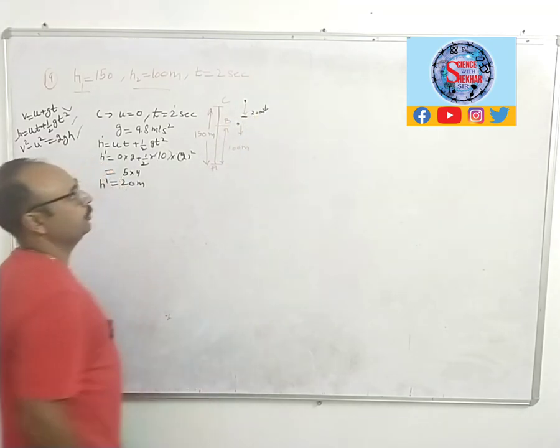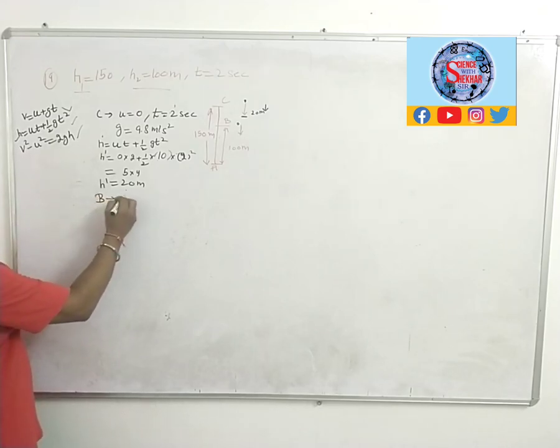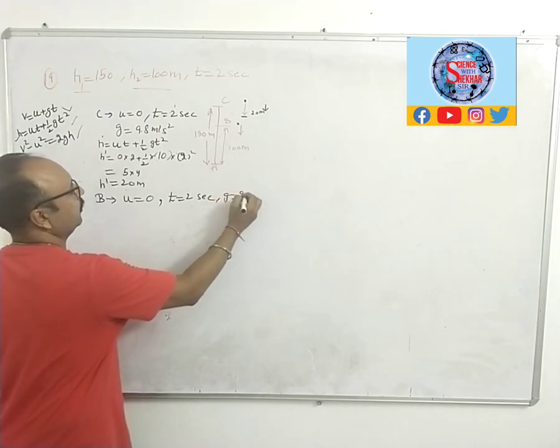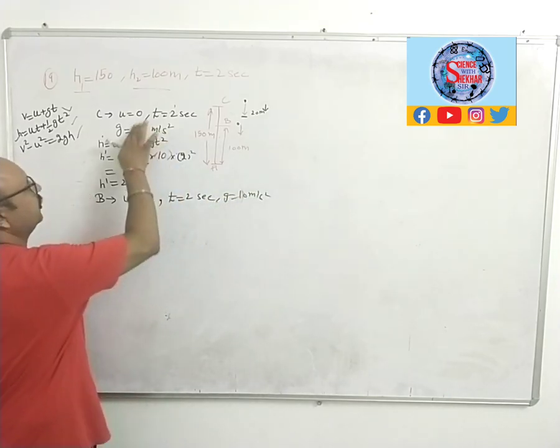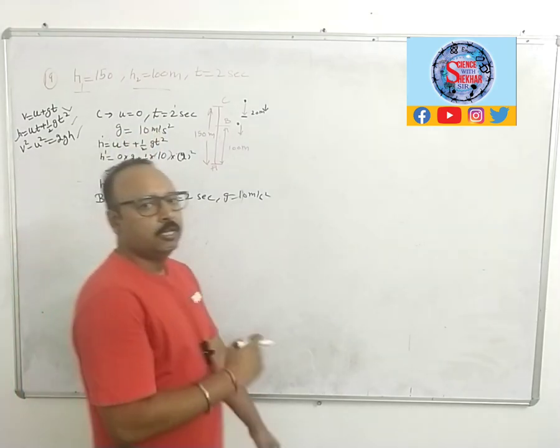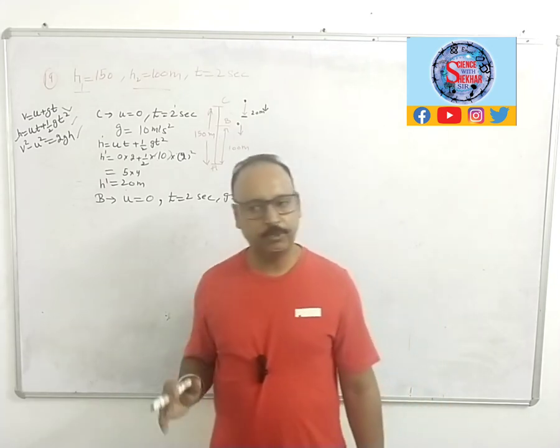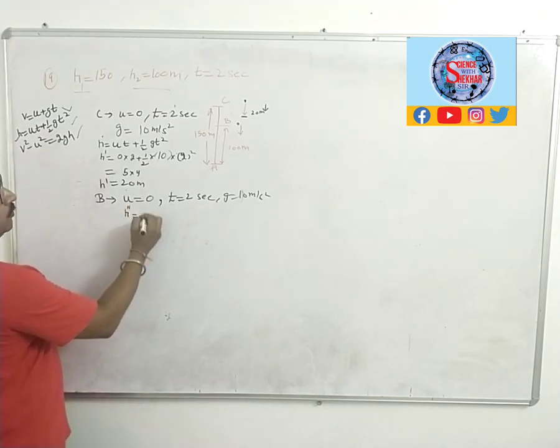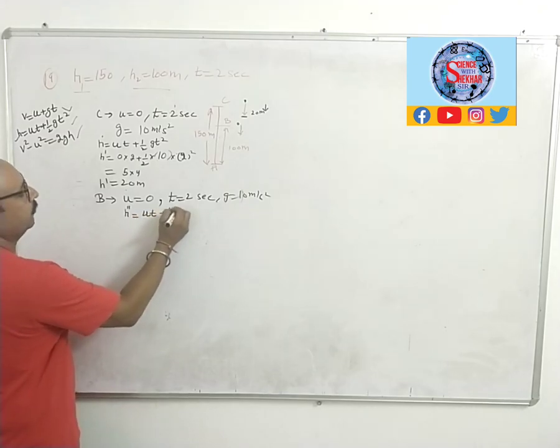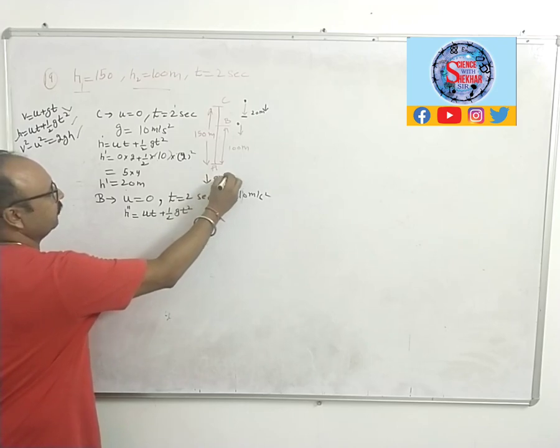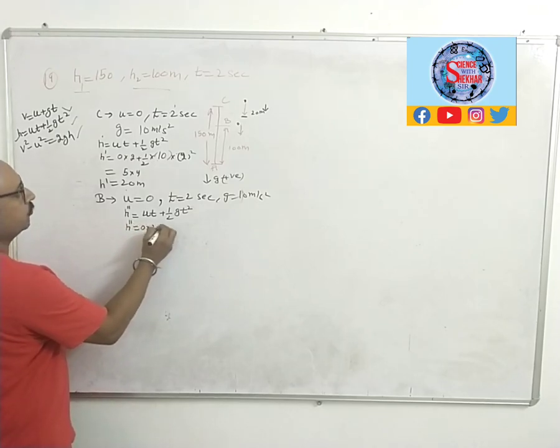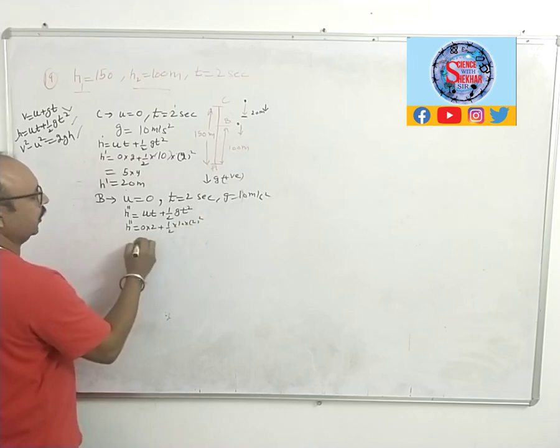Similarly we will do for B to C. Initial velocity zero, it is released, time again 2 seconds, and g we have used 10 meters per second squared. If acceleration due to gravity is given as 9.8, then you use 9.8, otherwise use 10, this is our choice for convenience. So H double dash, using the same equation UT plus one by two gT squared. That is equal to zero into 2 plus one by two into 10 into 4. H double dash is again 20 meters.